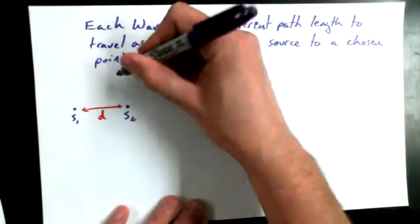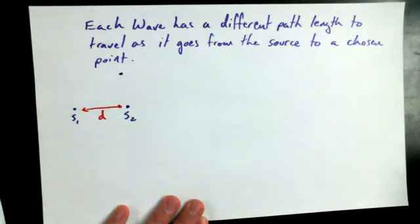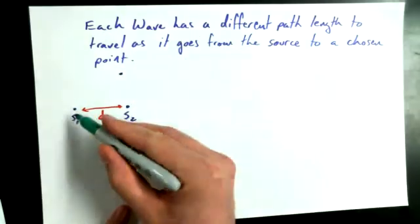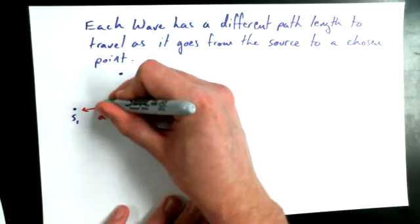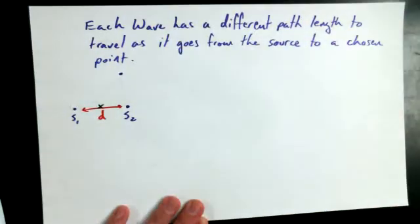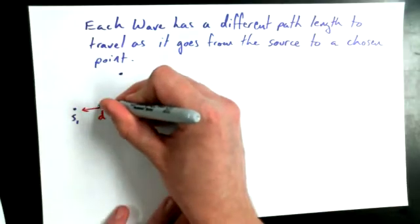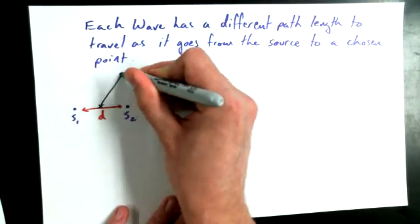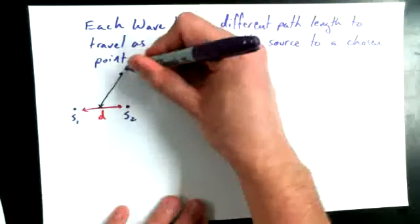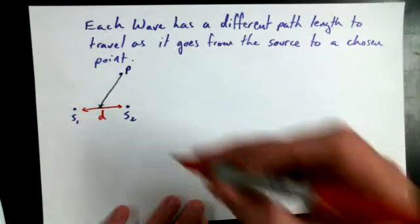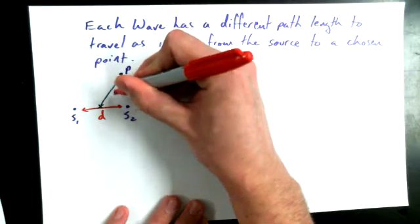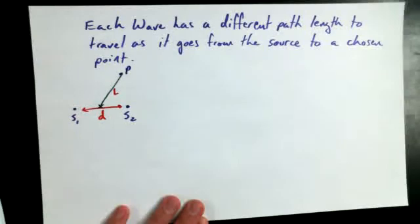And if I choose a point, point P, a nice convenient spot to choose for measuring distances isn't the distance between source one and point P. But if we choose a point that's halfway between them, we can talk about the distance between that midpoint, between source one and source two, and point P. And we might label it as a distance L. So we'll say that that point is L meters away from the two point sources that are side by side.